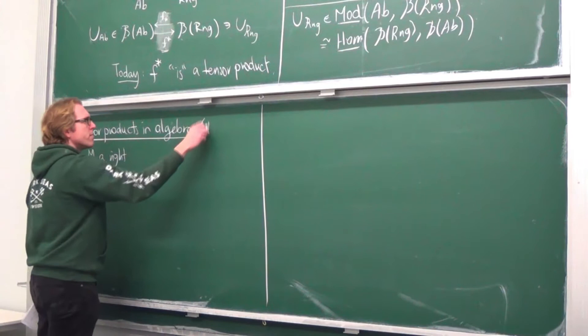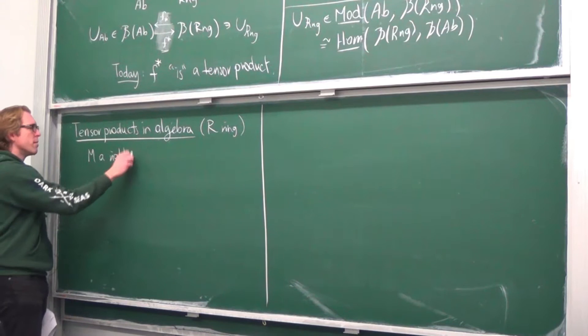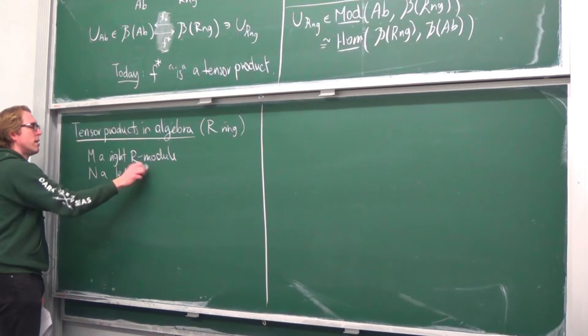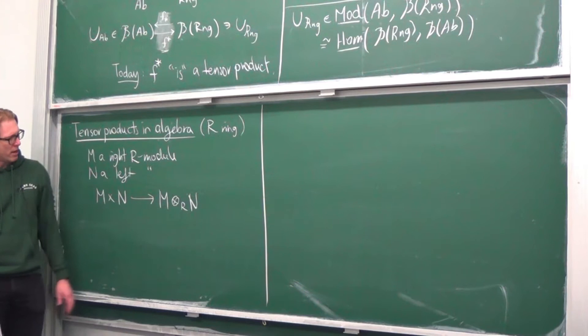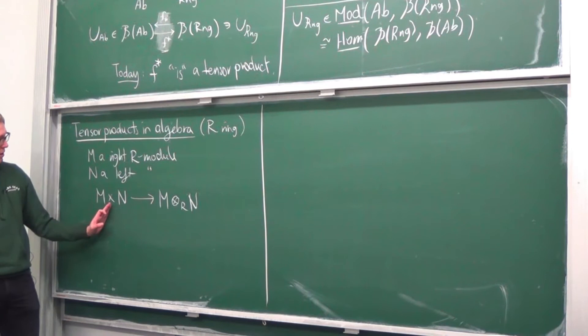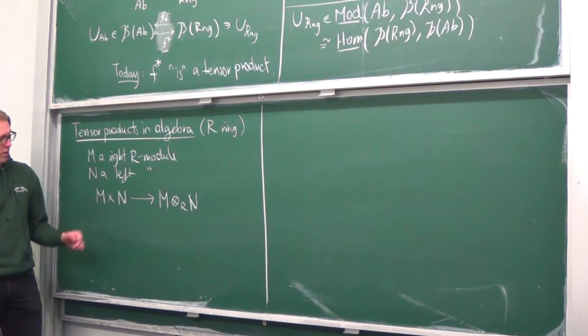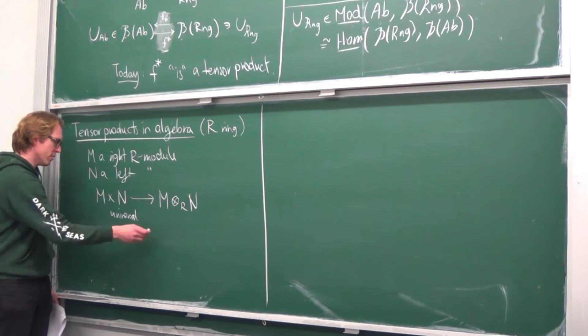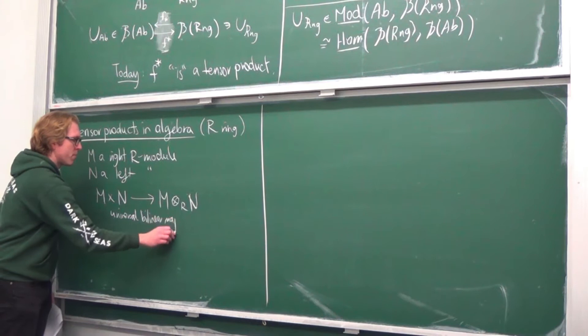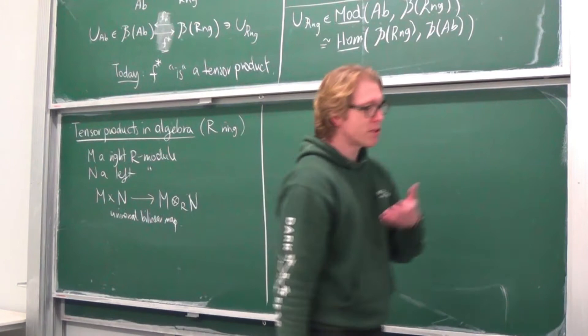Let R be a ring — associative and unital but not necessarily commutative. Let M be a right R-module and N a left R-module. Then the tensor product M ⊗_R N, which is some abelian group, comes equipped with a map from the Cartesian product M × N. That map has a universal property: it is the universal bilinear map from M × N into an abelian group. That universal property defines the tensor product.